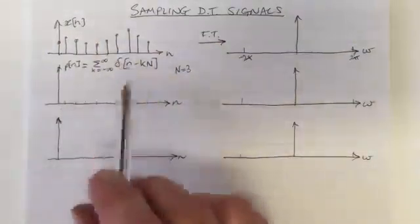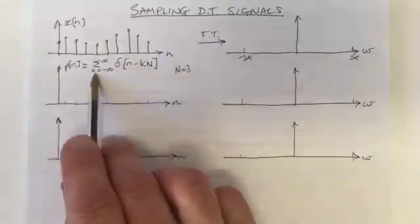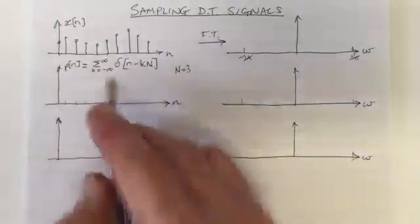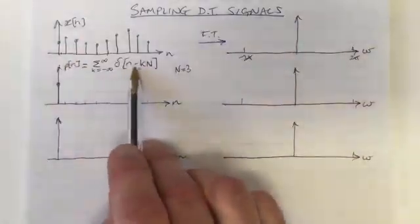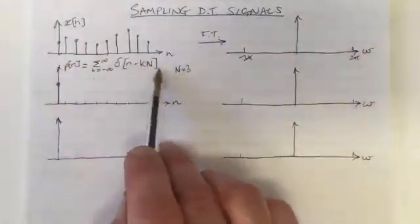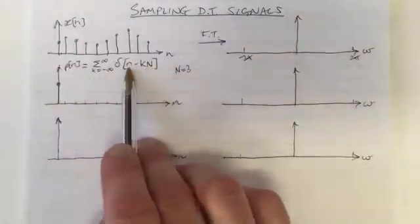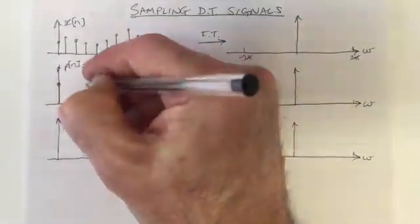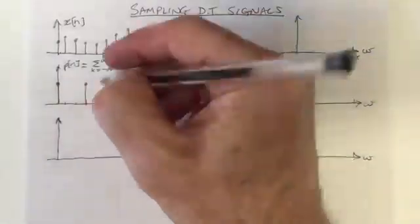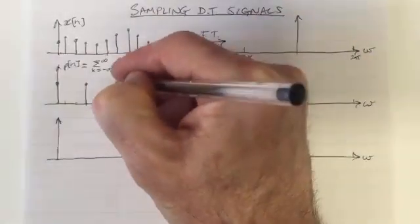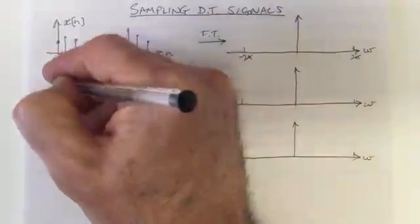So this delta function here exists at k with all the sums. k equals 0, we've got delta(n). So that's this one here. At k equals 1, we've got 1 times 3. So we've got a delta function at 3. And we've got a delta function at k equals 2. That's 2 times 3 is 6. And they're all of height 1.